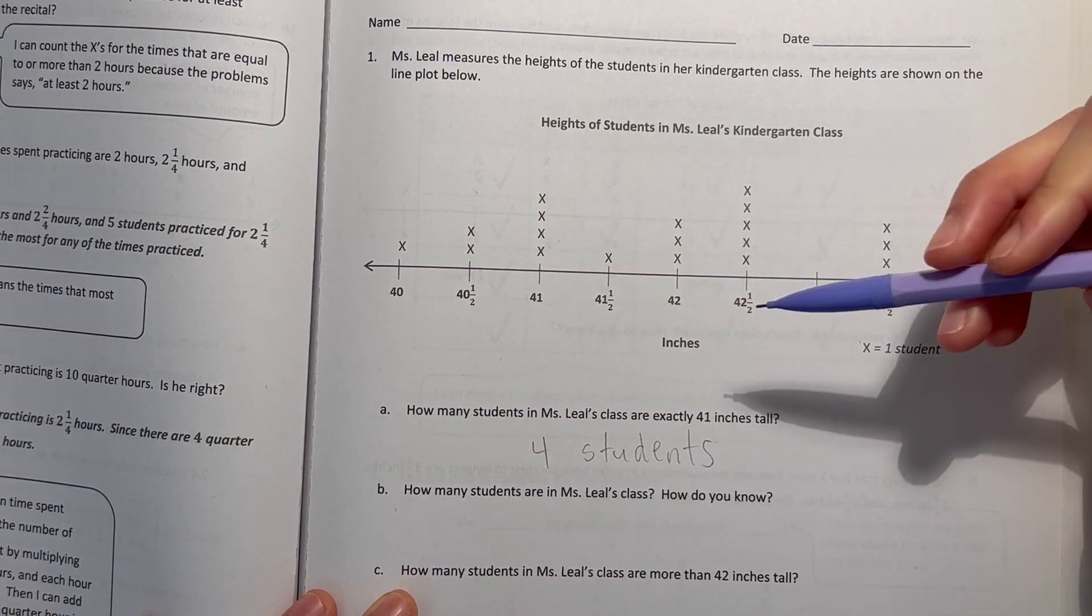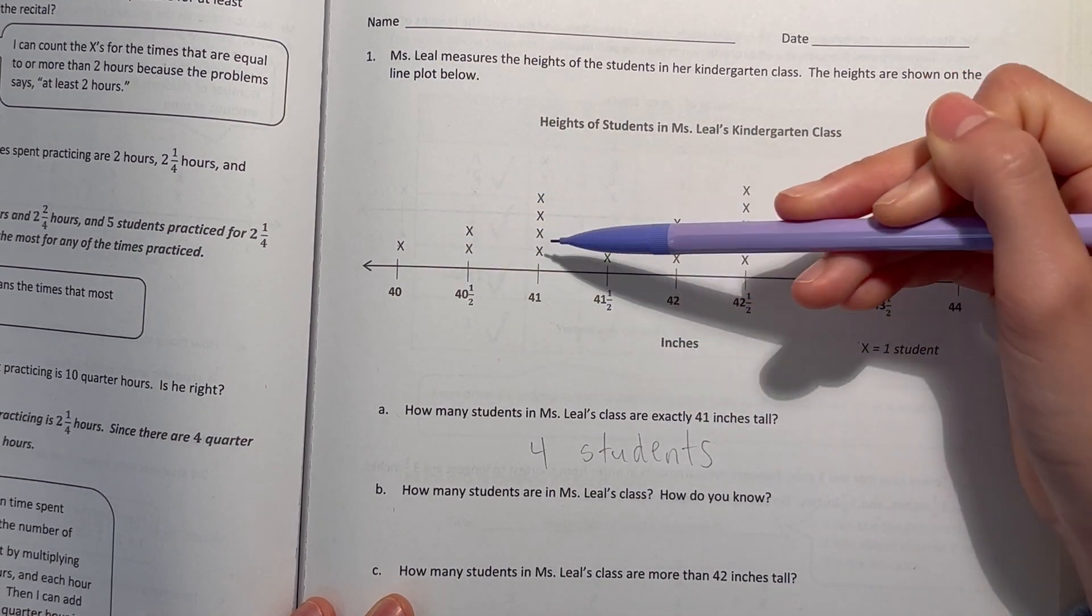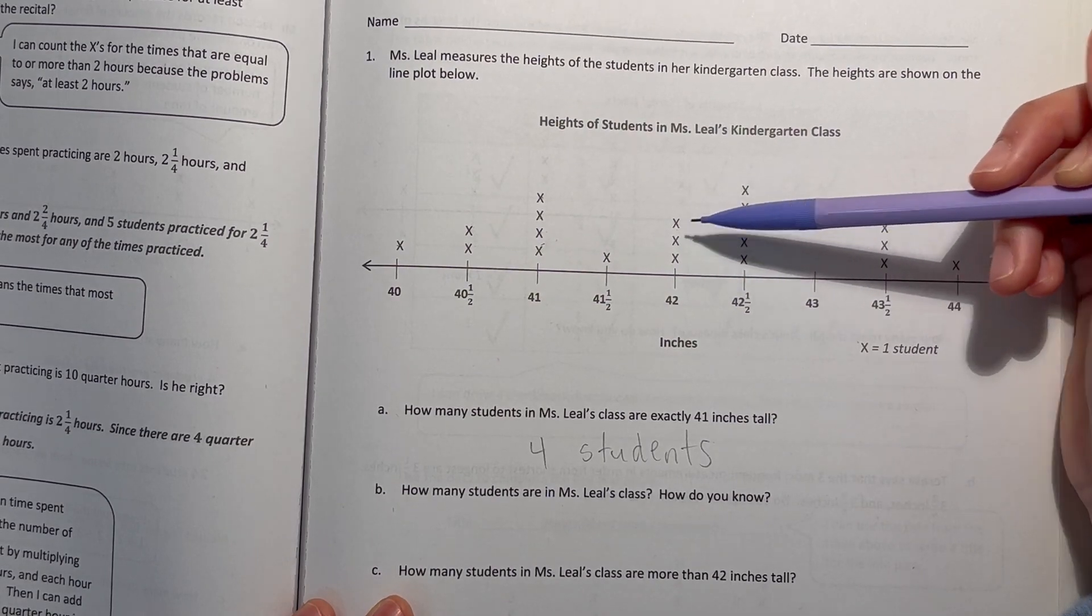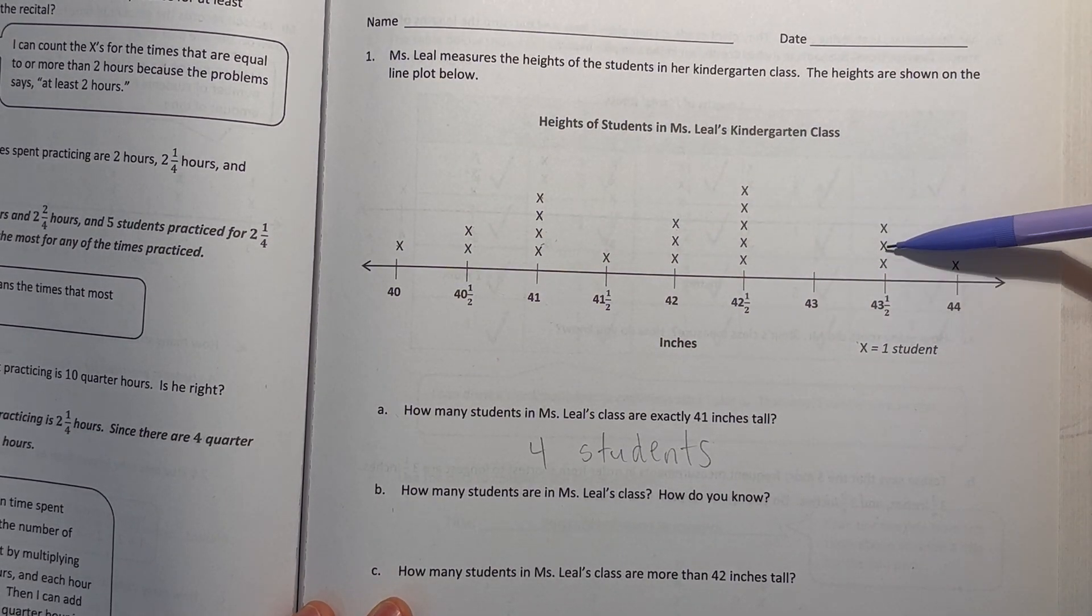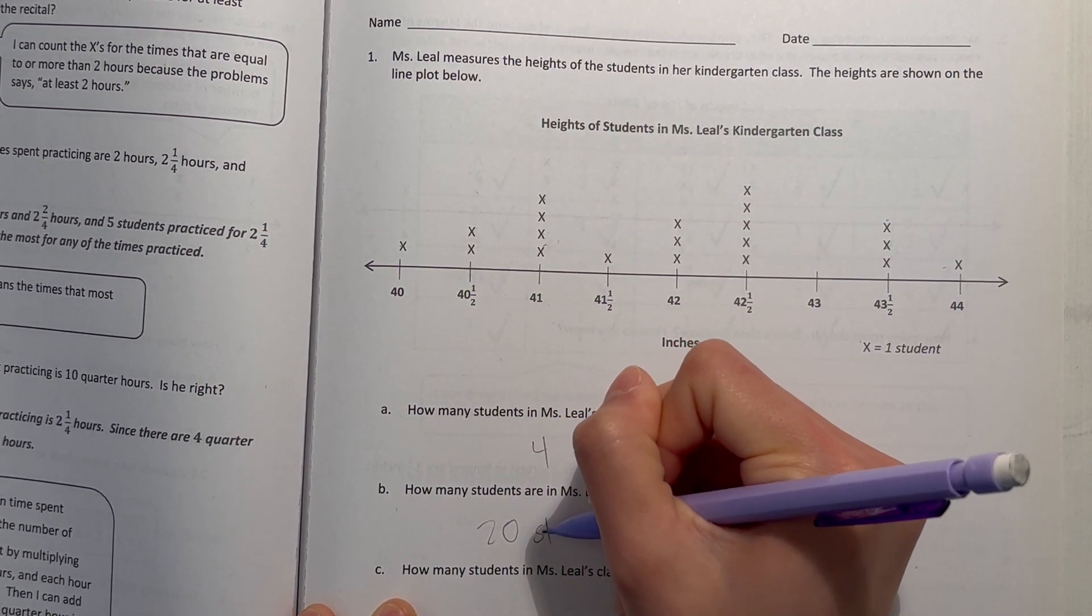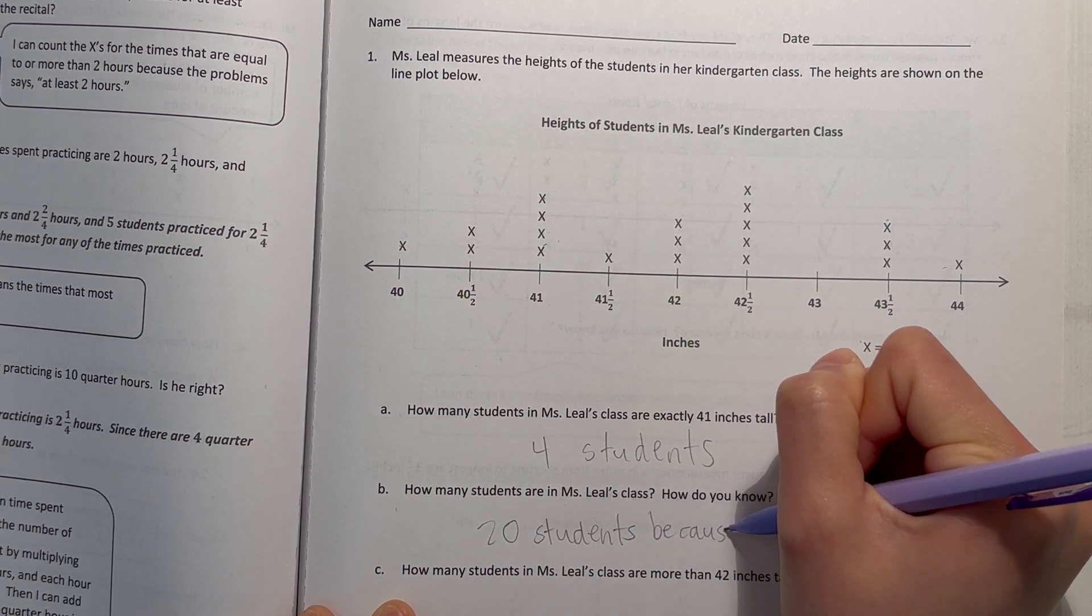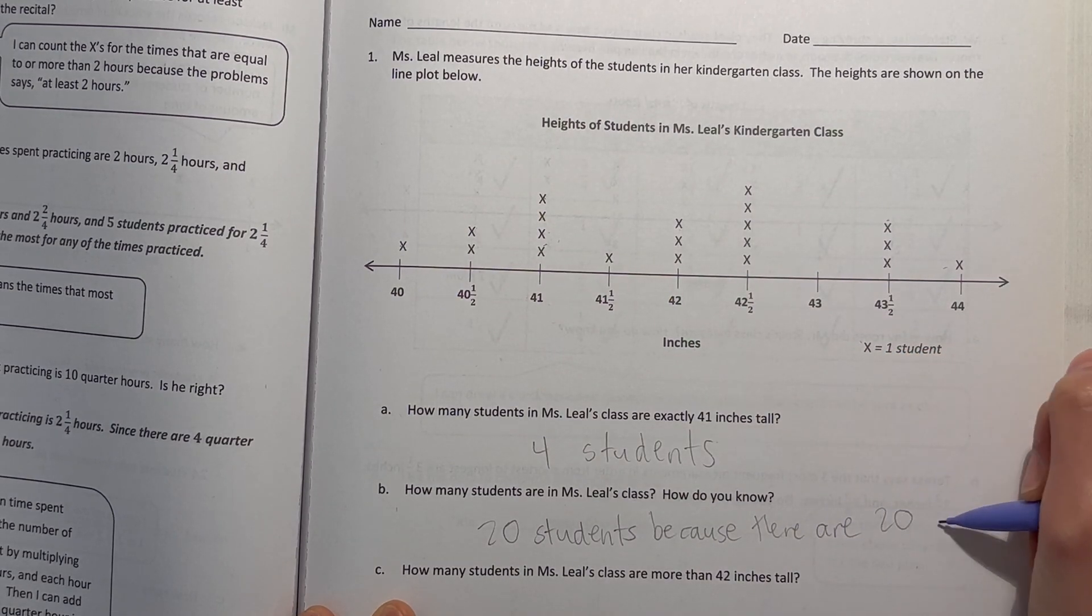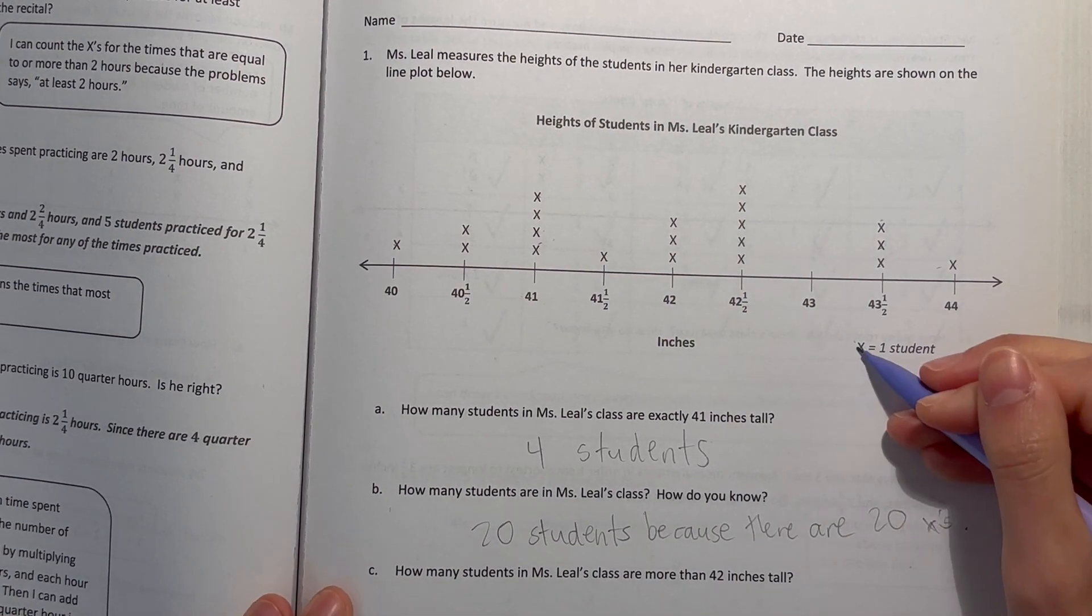And how many students are in Ms. Leal's class? How do you know? Well, 1, 2, 3, 4, 5, 6, 7, 8, 9, 10, 11, 12, 13, 14, 15, 16, 17, 18, 19, 20. 20 students because there are 20 x's and each x is one student.